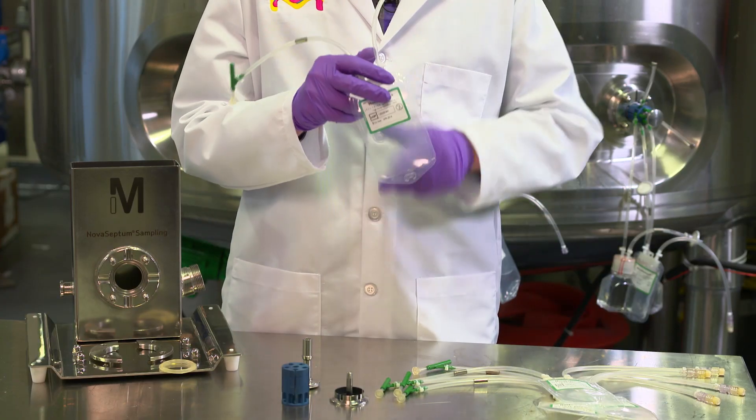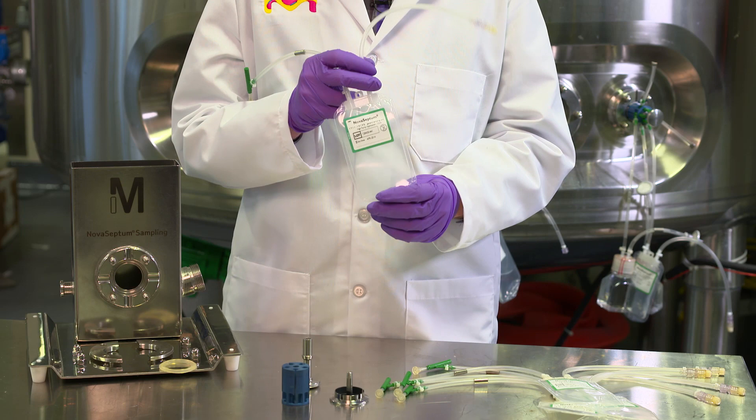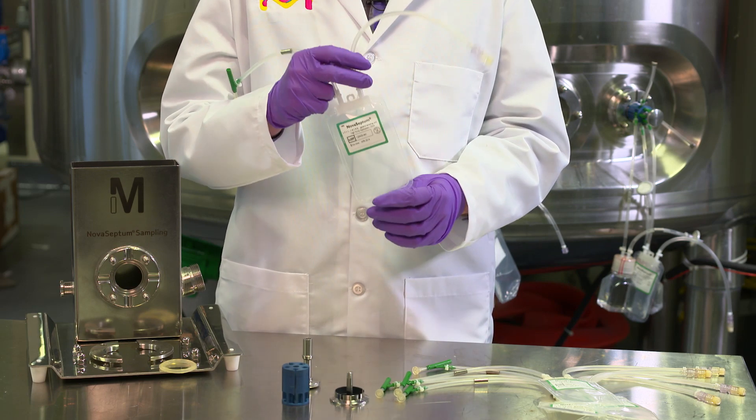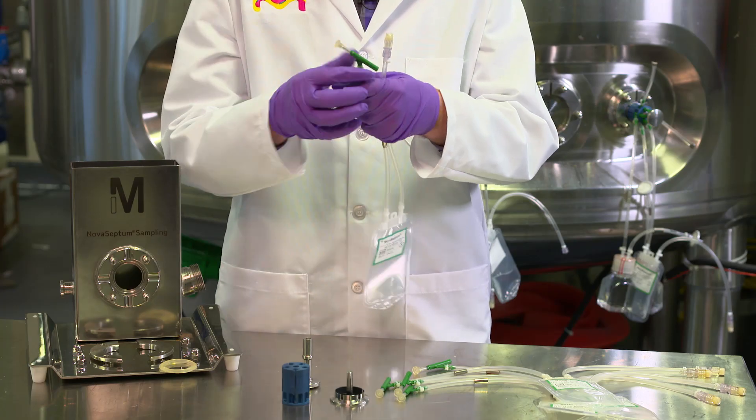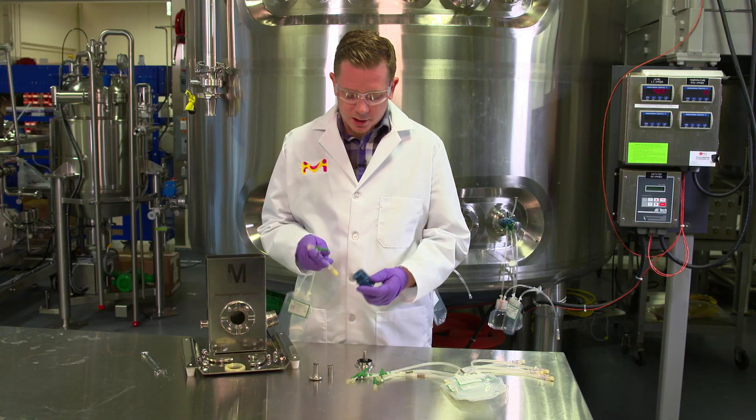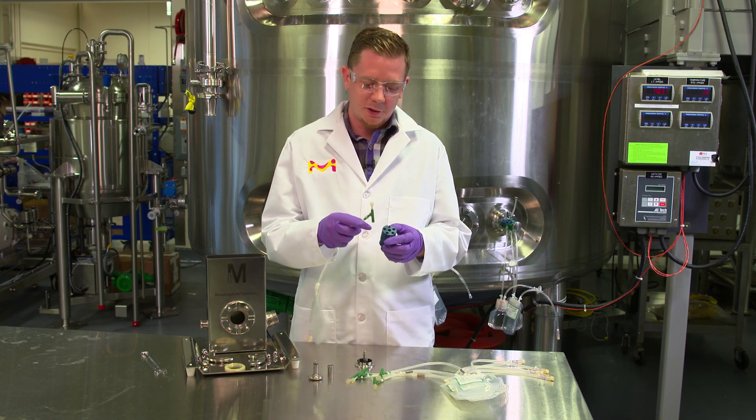The next step is to take our container, which is a closed, sterile container. It's sterile from being gamma irradiated, and it's closed on each end so that we maintain sterility. Each of the containers gets loaded up into the holder like so.